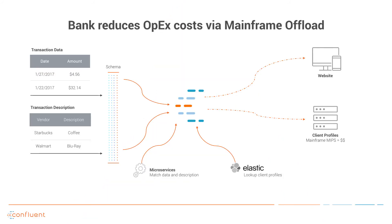The engineering team built a Kafka cluster, which they used to offload the client profile lookups from the mainframe — about 80% of the reads of the application. They wrote a small service and then used Elastic to execute the client profile lookups on the cluster. After completing this, they were able to reduce the cost of mainframe MIPS significantly, and that's just their first application.